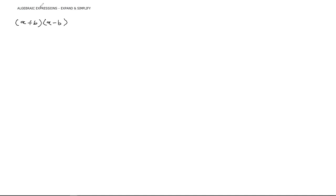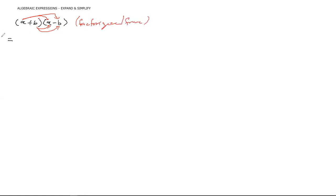If you think about this, expanding literally means FOIL. Then simplify means check if there are any like terms and group them. When you have something that is factorized — and let me mention that this is factorized form — to simplify I must first start by expanding, and to expand means FOIL first.